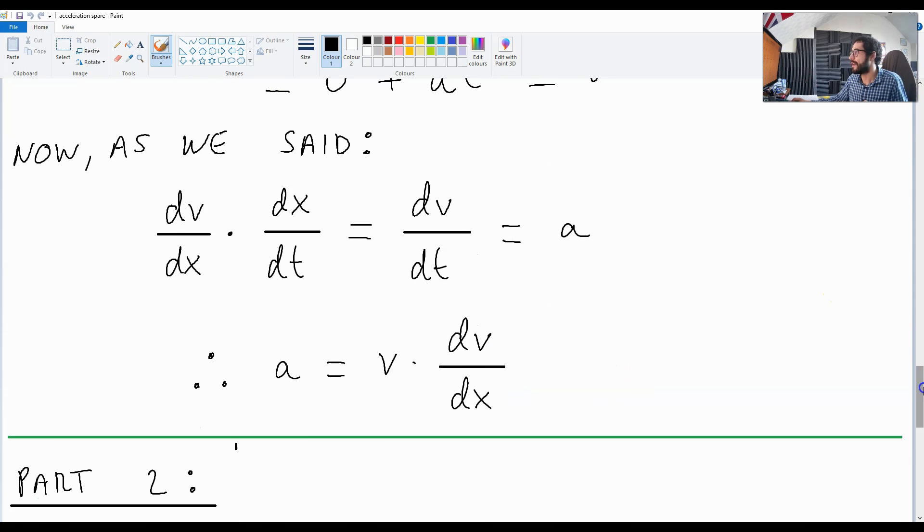It is possible to say that a is v times dv over dx.